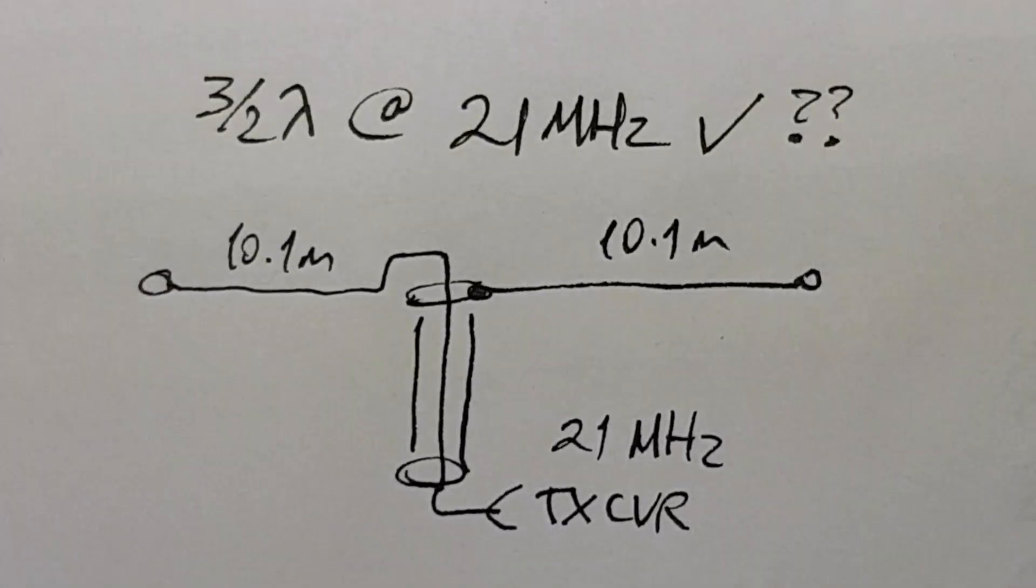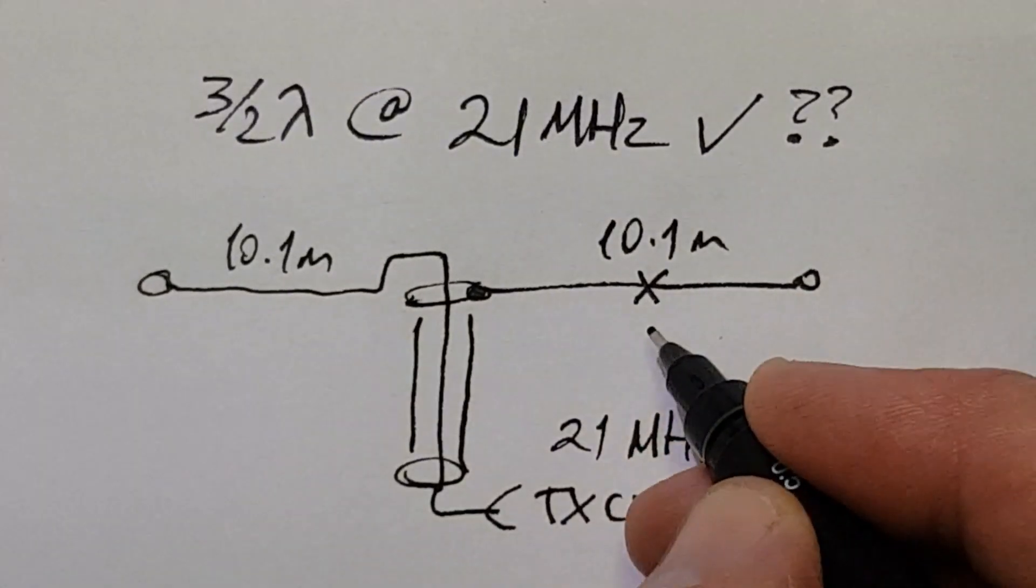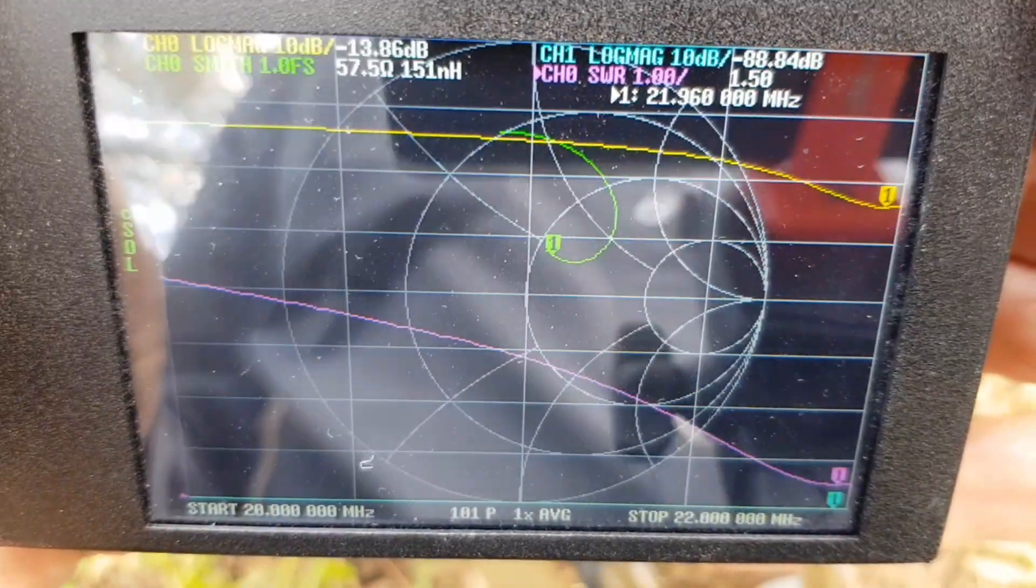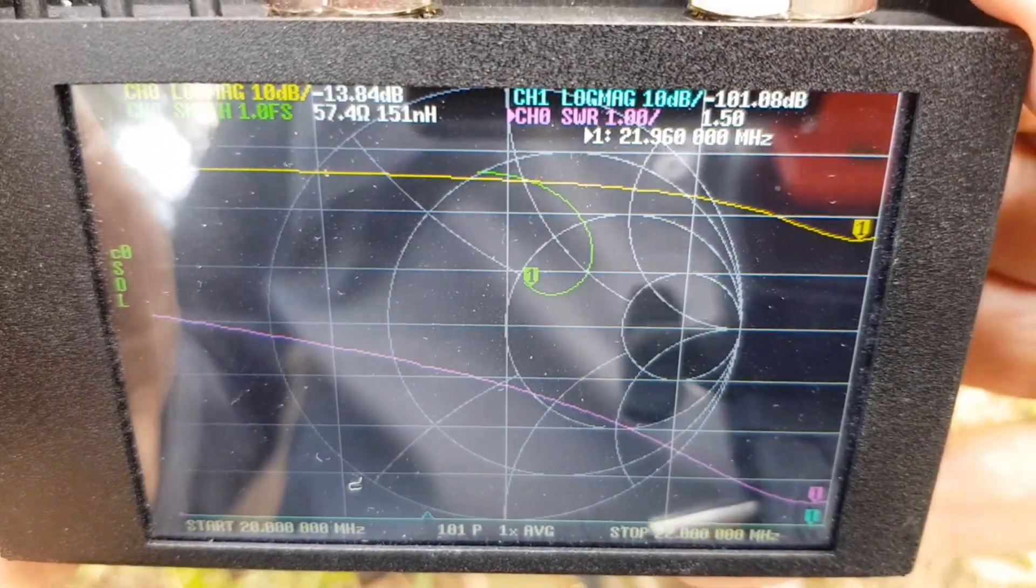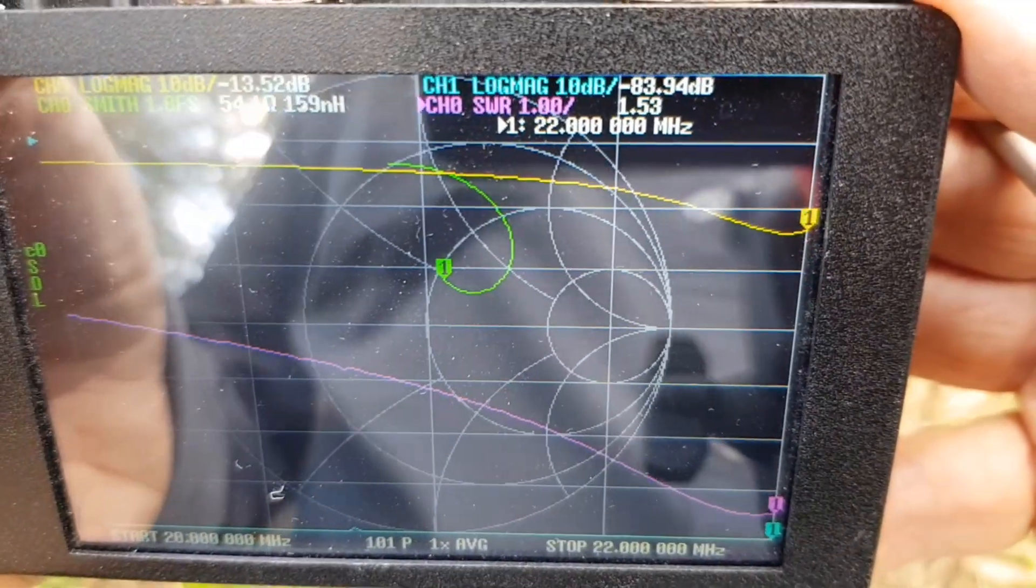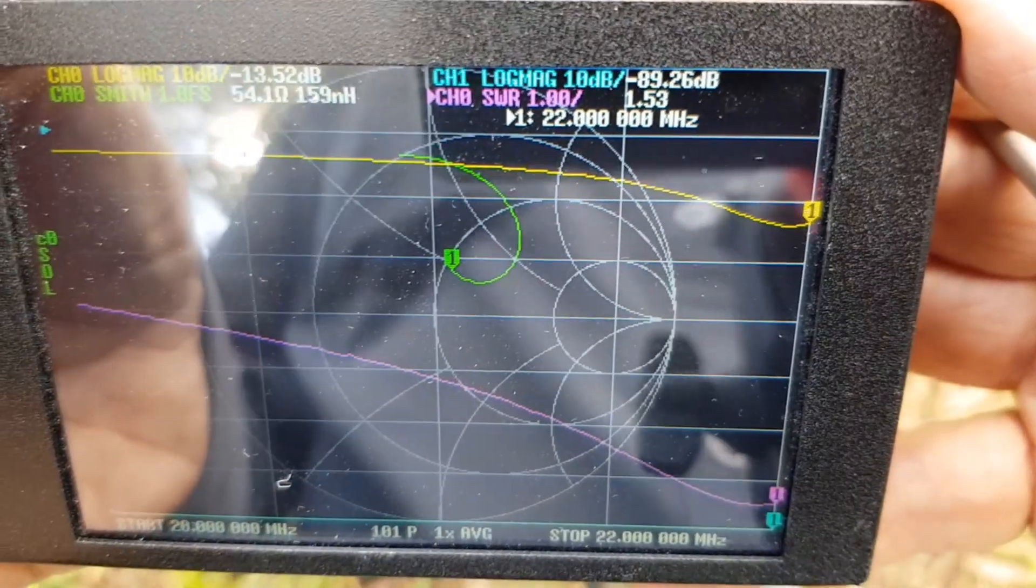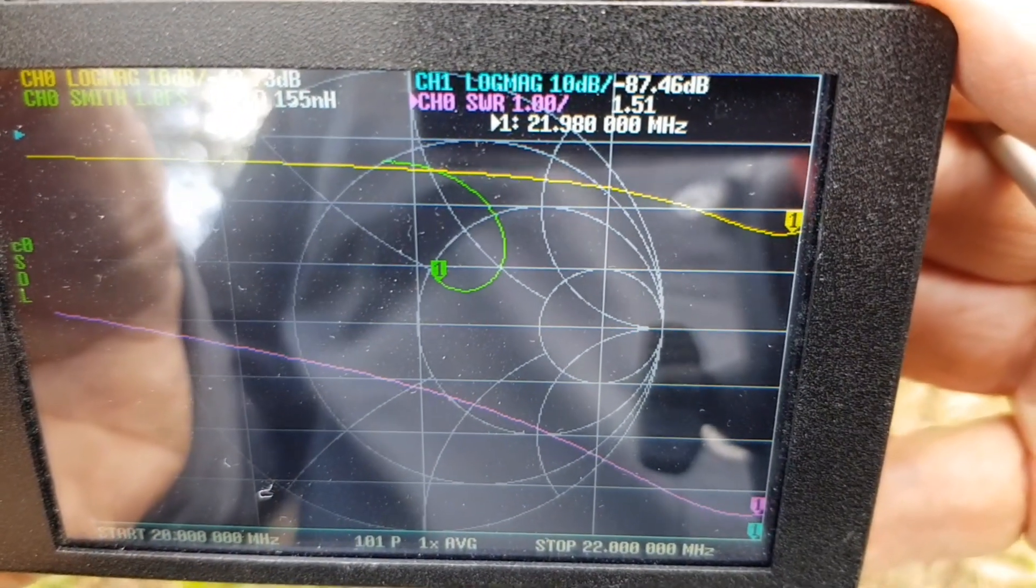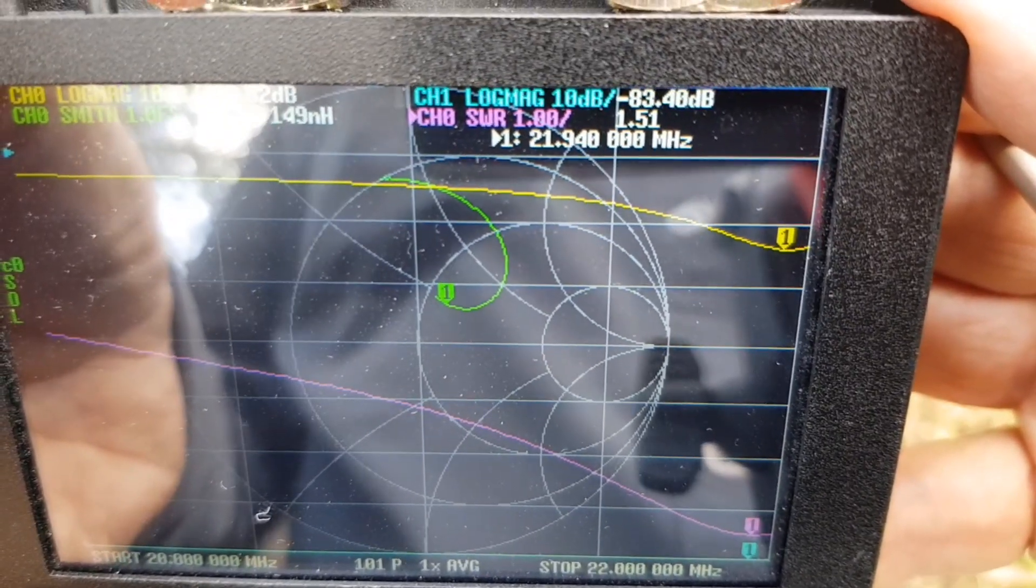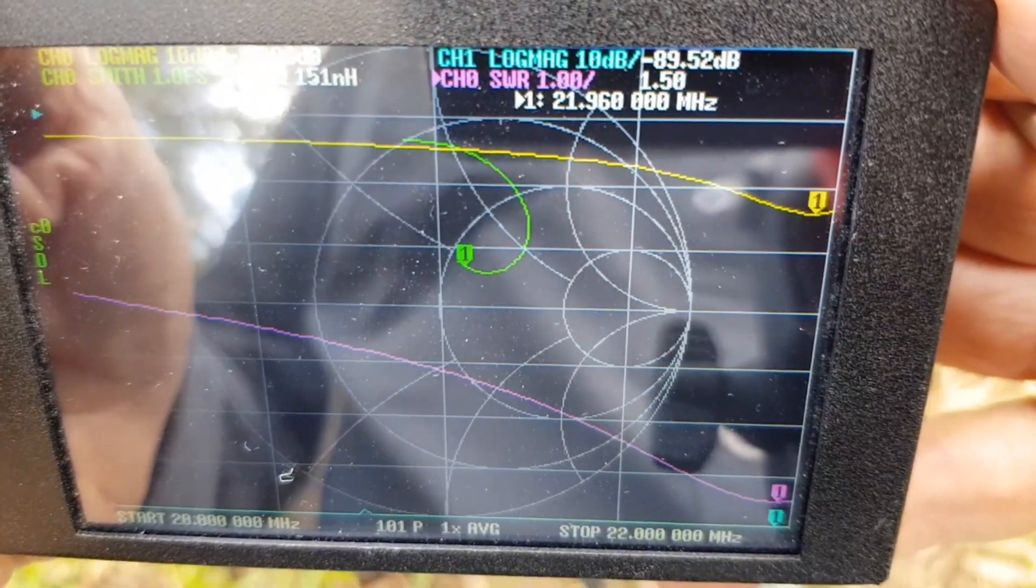First thing to do was to measure the resonance of my 40 meter dipole on 15 meters and verify the claim that it would be too long. So here's the 40 meter dipole as measured on 21 megahertz. And I haven't adjusted the sweep parameters. And so we're right on the edge of the display. But you can see that SWR is a minimum around about there. It's 1.5 to 1.